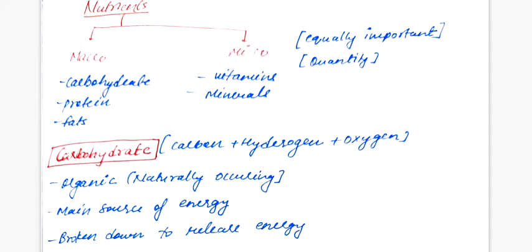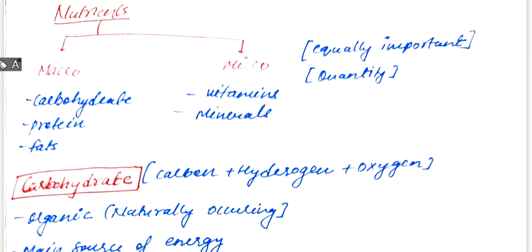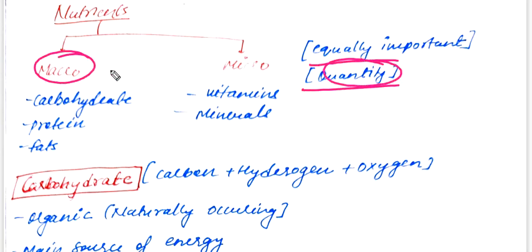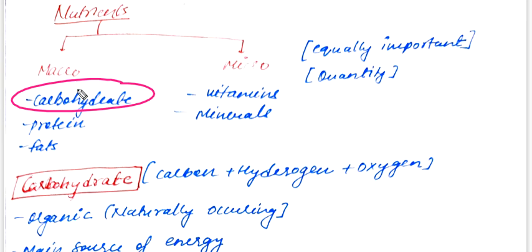So we have seen two types of nutrients: macro and micronutrients. Both are important in our body, just in different quantities. Macronutrients are needed in larger quantities — these are carbohydrates, protein, and fats. Micronutrients are vitamins and minerals. Let's talk about macronutrients, starting with carbohydrates.